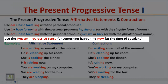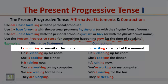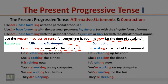Use the Present Progressive Tense for something happening now, or at the time of speaking. In this example: 'I am writing an email at the moment.' The activity is happening right now. So we use the Present Progressive Tense to talk about an activity that is happening now, at the time of speaking.